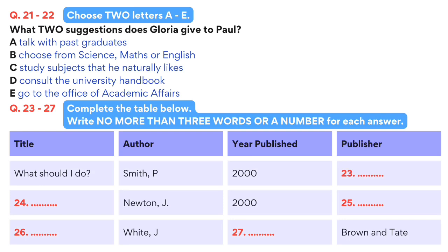No problem. This is just what I've been looking for. Anything else you could recommend? Yes. There was one other book which I remember because my cousin works for the publishers Brown and Tate — he started there in 2002. Anyway, the book's called Surviving University and was written by Julie White. It's an excellent book which came out in 2004. I certainly recommend it.